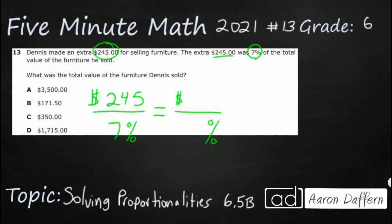We don't know how much money he made — that's the question, so that's our unknown. We can infer that if we want the total value, total values are worth 100%. So that's our only clue — a tough one, but there's our other number. And with that, we can do cross multiplication.